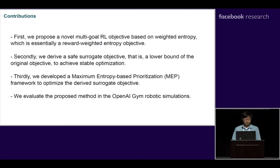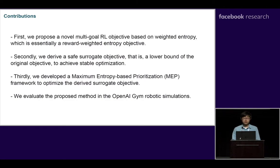To address this, we propose three contributions. First, a novel Multi-Goal Reinforcement Learning objective based on weighted entropy, which is essentially a reward-weighted entropy objective. Second, we derive a safe surrogate objective that is a lower bound of the original objective to achieve stable optimization. Third, we develop a maximal entropy based prioritization framework to optimize the derived surrogate objective. Finally, we evaluate the proposed method in OpenAI Gym robotic simulations.